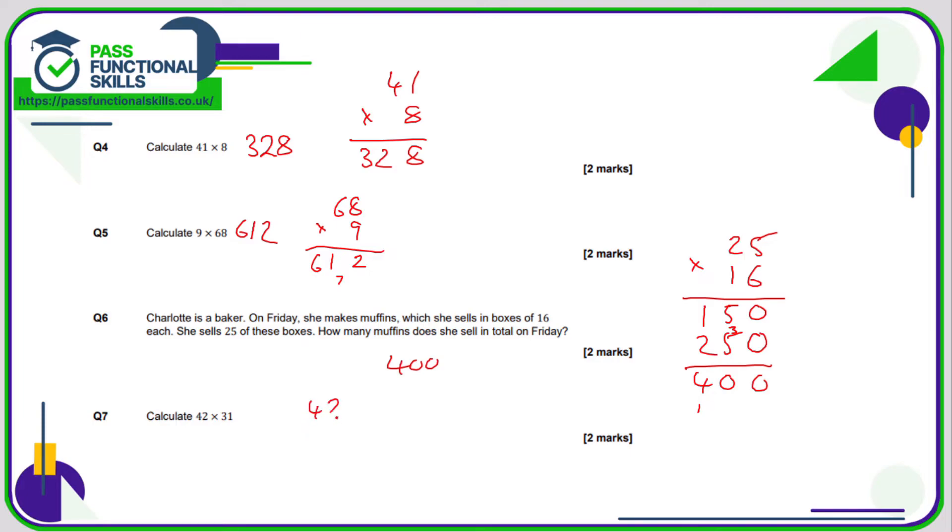42 times 31. 2, 2 digit numbers, so it doesn't really matter which way around they go. 1 times 2 is 2, 1 times 4 is 4. Repeat the process with the 3, but put in a 0, because this is the 3 of 30. 3 2's are 6, 3 4's are 12. Add these 2 numbers together: 2 plus 0 is 2, 4 plus 6 is 10, 0 carry the 1, 2 plus 1 is 3, 1 plus nothing is 1, so 1, 3, 0, 2.